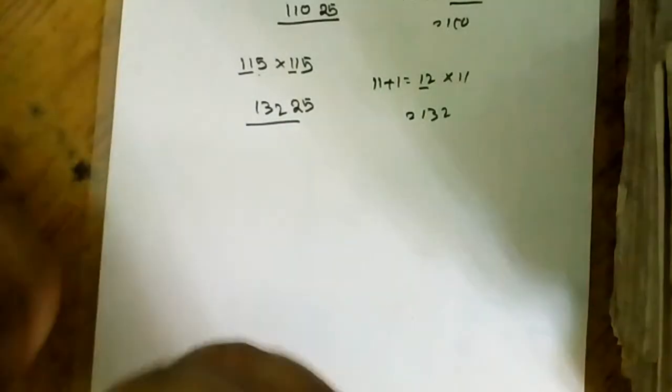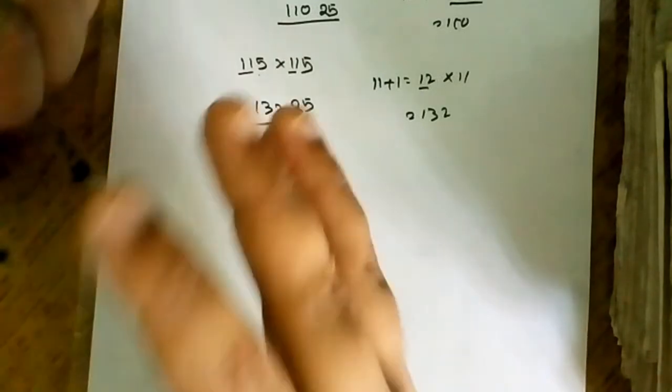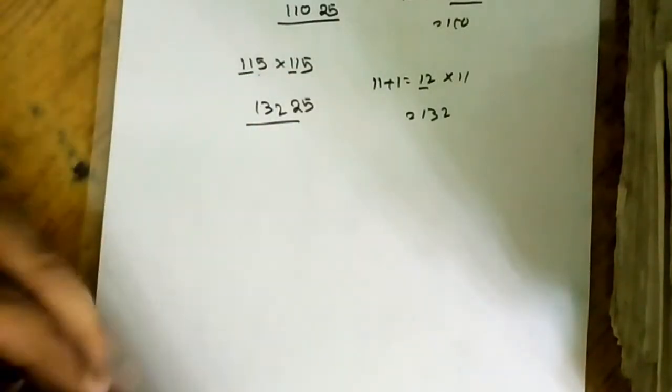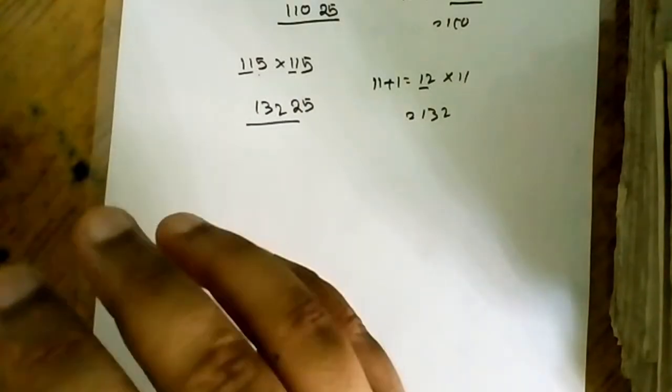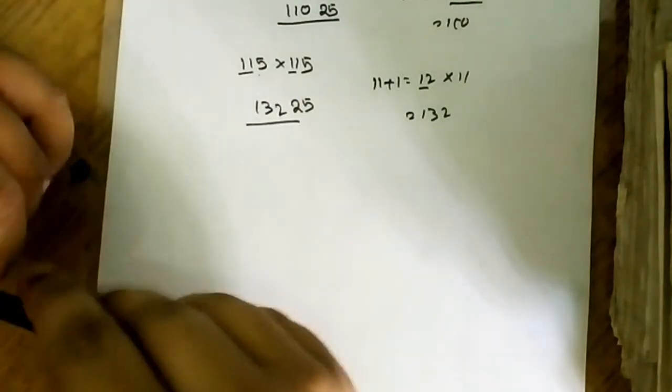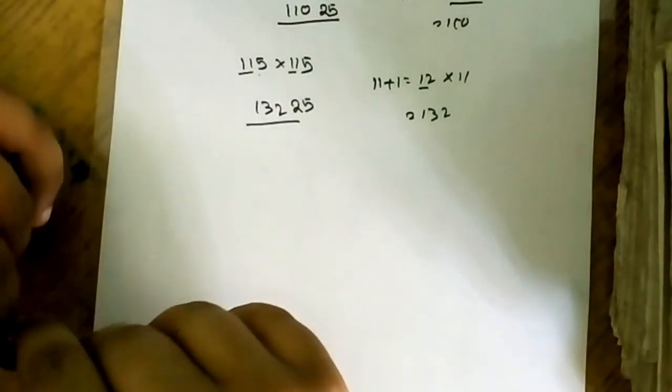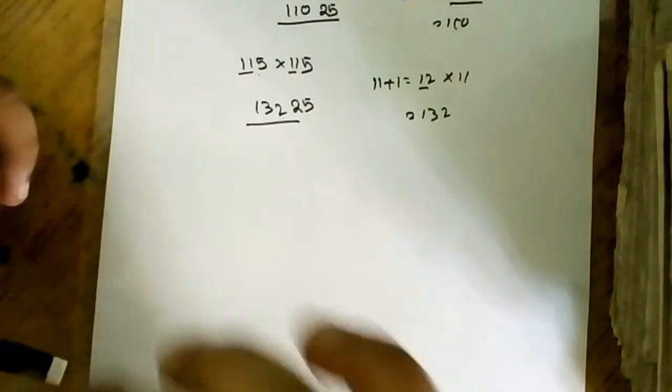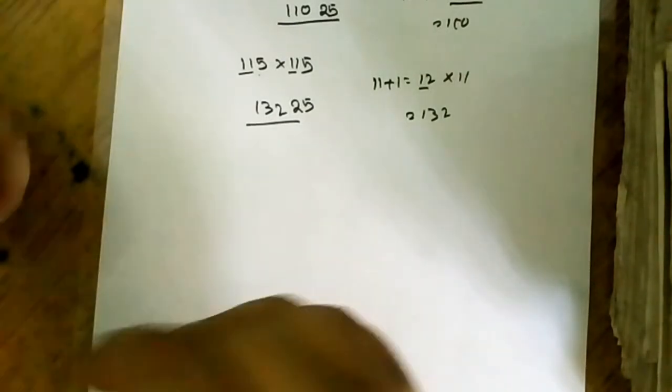I think this process will be much easier for you to multiply any two numbers whose last digit is 5. If you maintain this process, you will be able to solve it within 5 or 6 seconds. So practice as much as you can. That's it from today. Thank you so much and please subscribe my channel so that you may know many more tricks. Have a nice day.